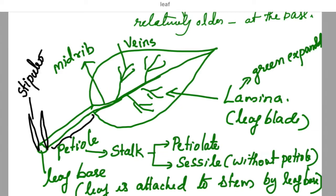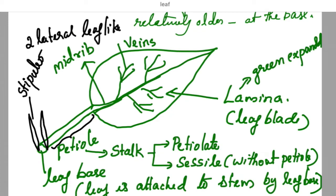Two lateral leaf-like structures attached at the leaf base are called stipules. What are stipules? Two lateral leaf-like structures at the leaf base — these are called stipules.